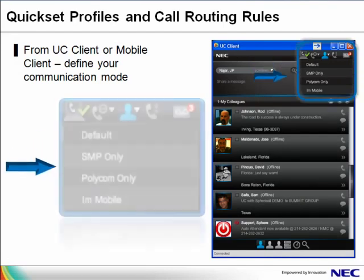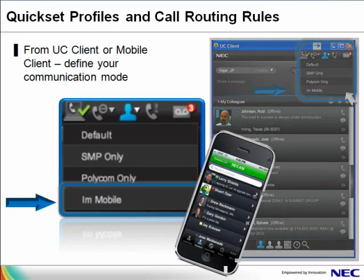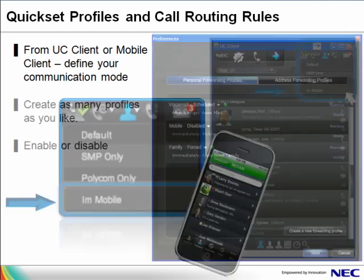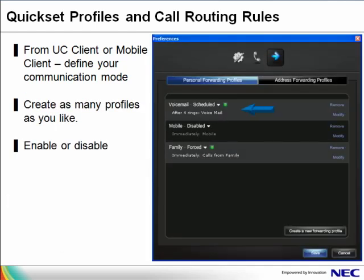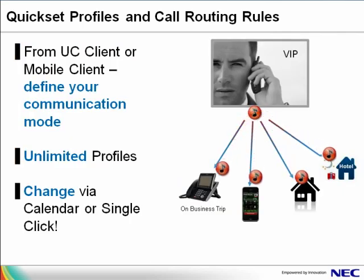With quick set profiles and routing rules, you have full control of when you receive calls, from whom, and under what conditions. This is easily set from the UC client or the UC mobile client. Profiles may be enabled or disabled. For example, you can have a voicemail profile which allows calls to ring four times and then go to voicemail. You can also have a mobility profile which, when enabled, allows you to receive calls at your desk or your cell phone at the same time — as many devices as you like. We call this twinning. Once you answer one of the devices, the others stop ringing.